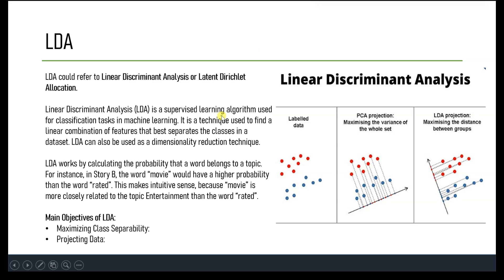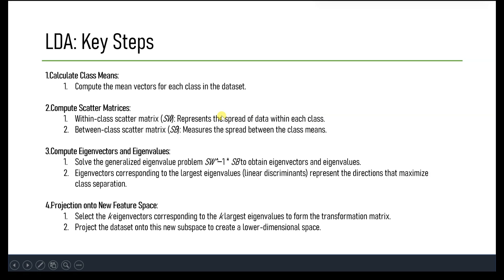Now let's understand LDA's key steps. First, we calculate the means. For each class in the dataset, we compute the mean vector, which represents the mean value of each feature for that class. The mean vector captures the central tendency or average of data within each class.